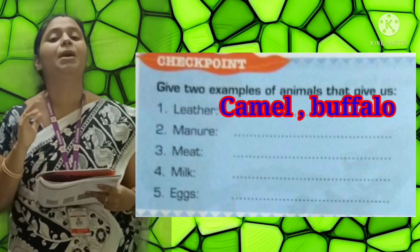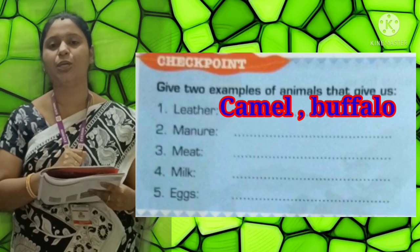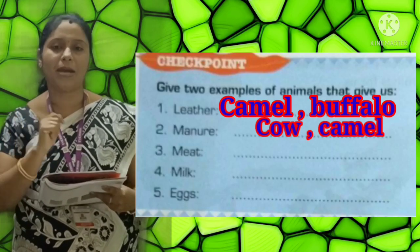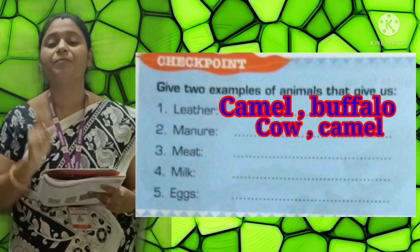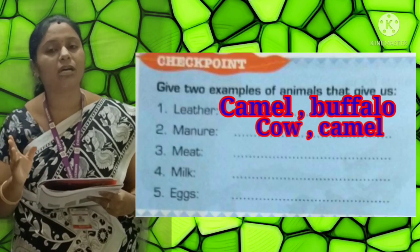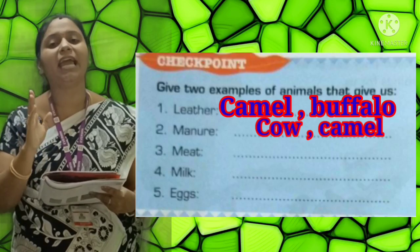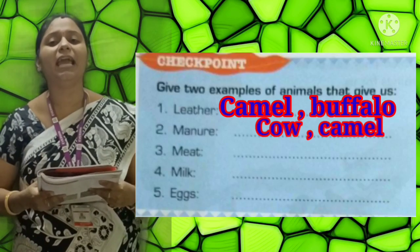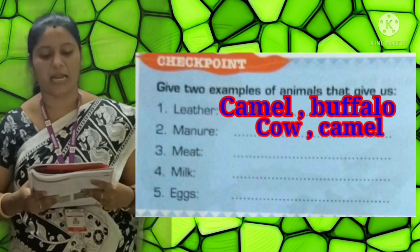Second: Manure. We get manure from Cow (C-O-W) and Camel (C-A-M-E-L).